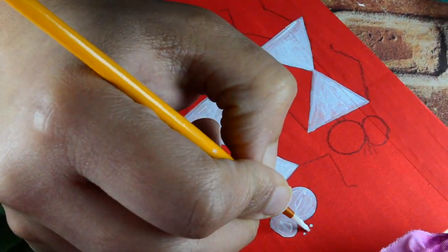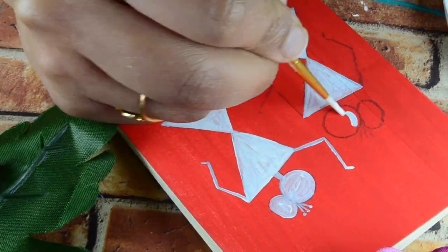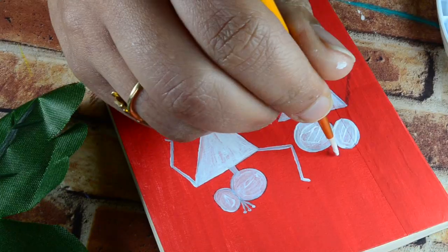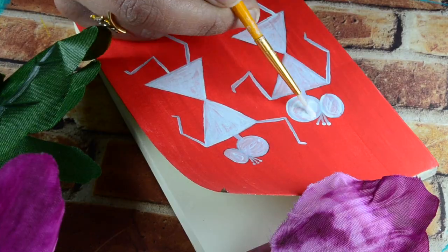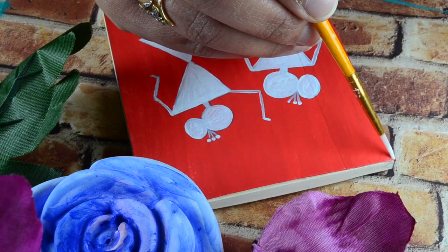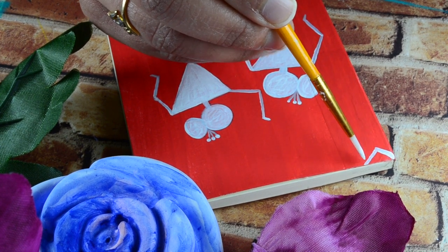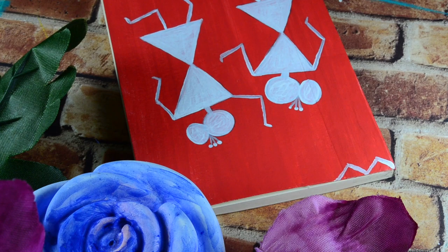Depending on what opacity you are looking for, you can add more layers of white paint if you feel. I'm adding two layers of white paint on it, and then at the end I'll be adding a black border using a Uniball gel pen. That will complete our warli art notebook cover.